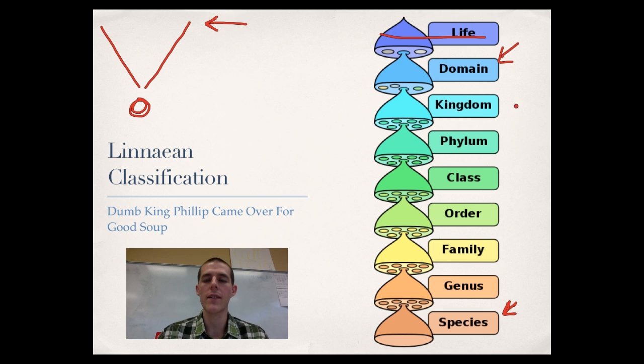Now, something to recognize is that each of these bigger categories is made up of these smaller categories. So, for example, domain is made up of several different kingdoms. A kingdom is made up of several different phyla. Phylum is made up of several different classes. Class is made up of several different orders. Order is made up of several different families. And then we've got a genus and a species. Obviously, a genus is made up of several different species.